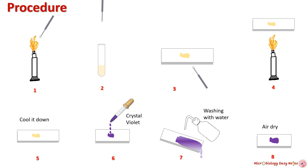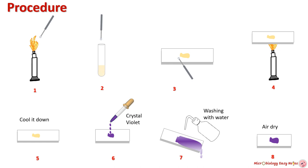Gram staining procedure: Take an inoculation loop and sterilize it over a flame. After cooling it down, take a loopful of culture and make a smear in the center of a clean glass slide. Let it air dry for a minute. Now pass the slide over the flame two to three times — this step will heat-fix the smear.